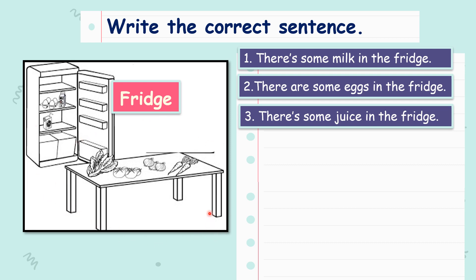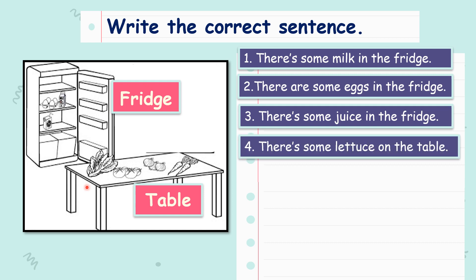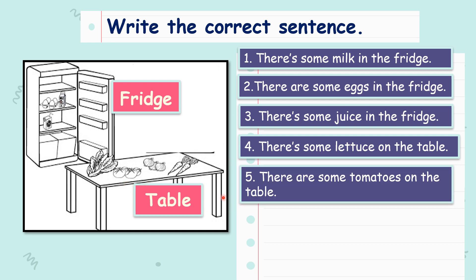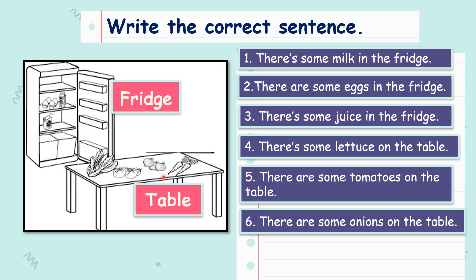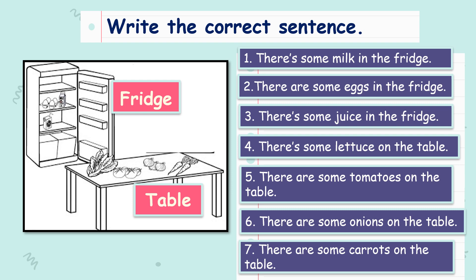Now let's try the items on the table. We have lettuce, tomatoes, onions, and carrots. So how do you write the sentence using lettuce? Lettuce is uncountable, therefore the answer would be: there is some lettuce on the table. What about tomato? There are some tomatoes on the table. There are some onions on the table. And the last one — very good — there are some carrots on the table.